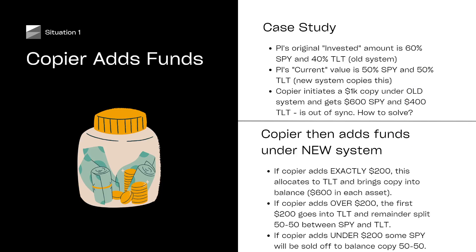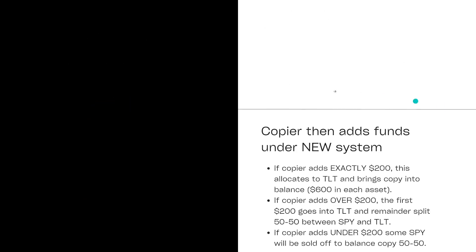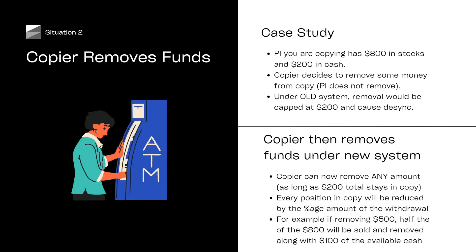I'll let you get your breath back before we move on to the next part, which is copiers taking funds out. I'm pleased to say that copier removing funds works better than it used to. The case study here is you're copying someone who has $800 in stocks and $200 in cash. Let's say you're copying for a grand as well, so you're 100% in sync. So you decide you want to take some of that $200 cash out, but the PI doesn't take the cash out of their copy. Now, under the old system, two things would happen that are negative. First of all, you couldn't remove any more than $200 in cash unless you manually closed entire positions within the stock part.